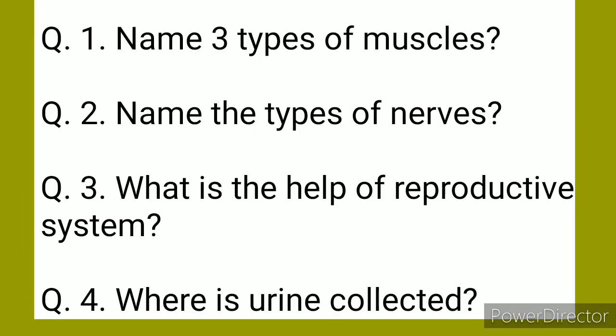Now, do it yourself. Question one: name three types of muscles. Question two: name the types of nerves. Question three: what is the function of the reproductive system? Question four: where is urine collected?